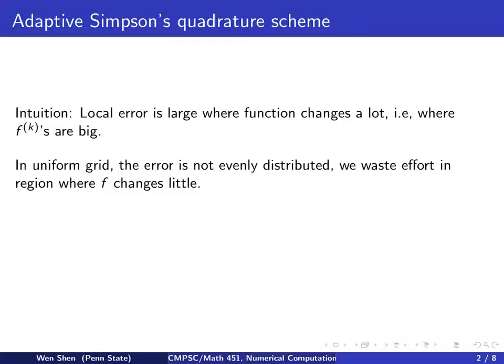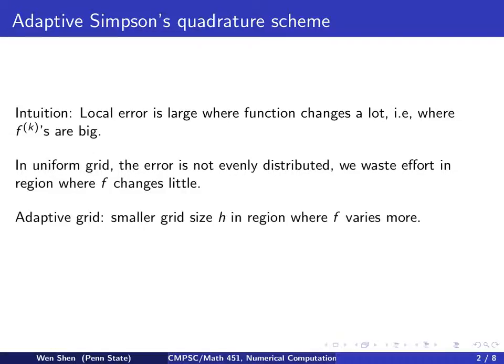We could have used a coarse grid and still get high accuracy, yet we wasted effort by throwing many fine uniform grid points there. So here comes the idea of adaptive grids: instead of using uniform grids, we allow the grid size to vary. In regions where f's derivative changes faster, we put smaller grid size and more points, and for regions where f changes little, we allow a bigger grid size and fewer points.